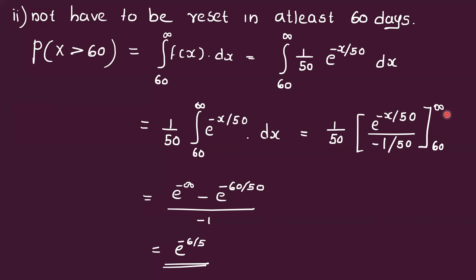Applying the upper and lower limits: e^(-infinity) minus e^(-60/50), divided by minus 1. Since e^(-infinity) = 0, the result is e^(-6/5).